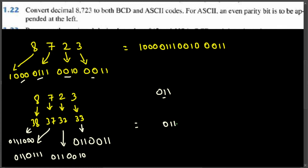Writing them all out together, the seven-bit ASCII binary codes for 8723 are: 0111000, 0110111, 0110010, 0110011.